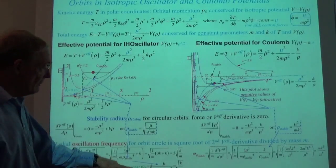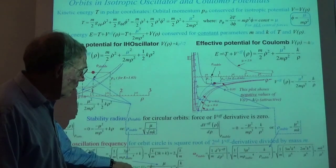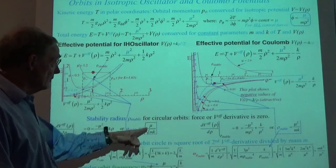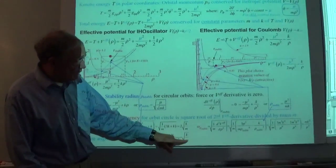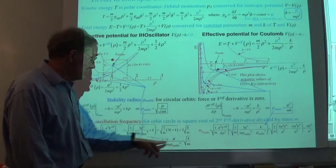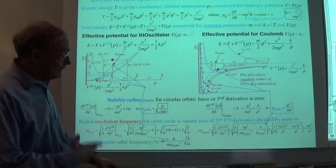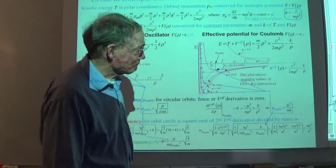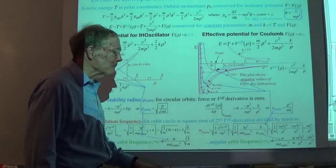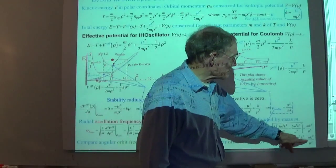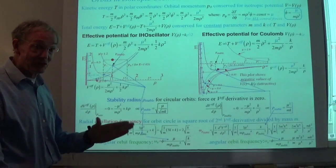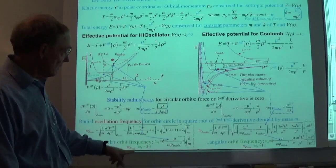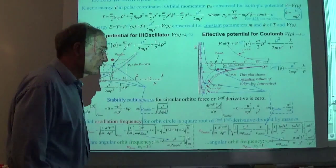Here we compare the angular-to-orbit frequencies. That is, ω_φ — which is φ-dot — gives me this expression. When you put in the value for ρ_stable, it cancels out to just give us k/m. That's the angular part that gives the right value you'd expect from an oscillator with spring constant k and mass m. For the Coulomb case, you might think it would give a mess, but it doesn't. The angular oscillation equals the radial oscillation — one to one. So the one-to-one for Coulomb is to be compared with the two-to-one for the harmonic oscillator.